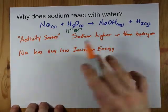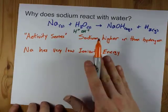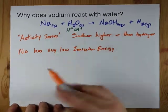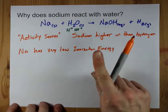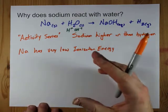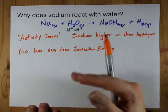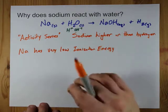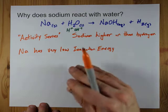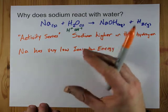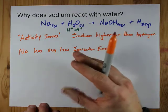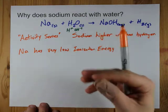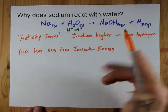Neutral sodium has 11 electrons, including one in its outer shell. Wouldn't it love to get rid of that extra one electron so it has a full outer shell, or a complete octet?